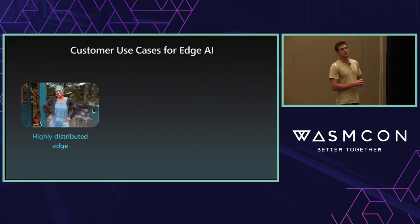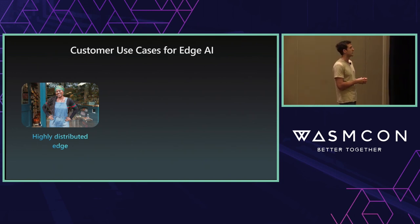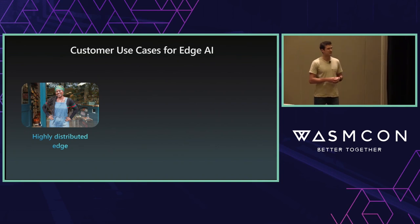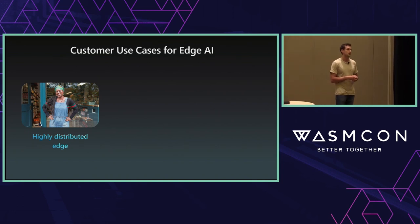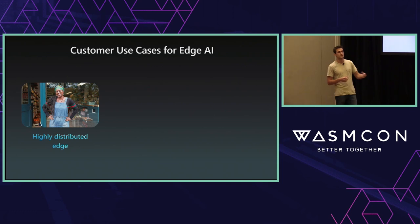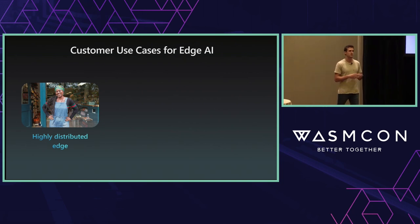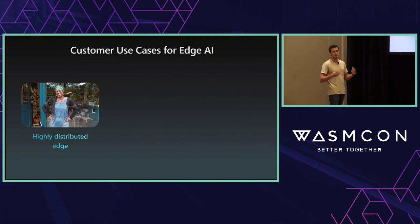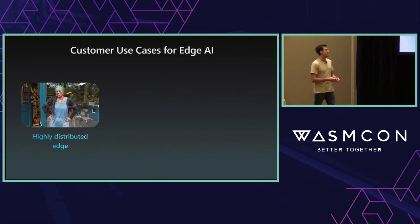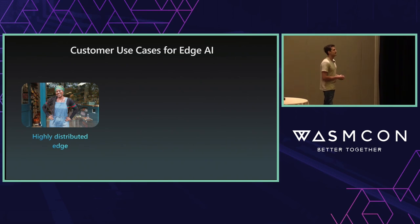We also have customers in the medical vertical, seeing a lot of vision AI — using algorithms to help doctors with diagnosis. And then a lot of retail: using AI models to determine customer patterns in retail shops — how customers are moving around, how they interact with different products. We're working with food chain restaurants where edge AI takes the order using gen AI, and then another AI algorithm does vision AI to determine if the order was prepared correctly.